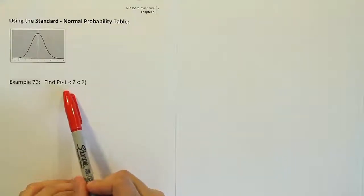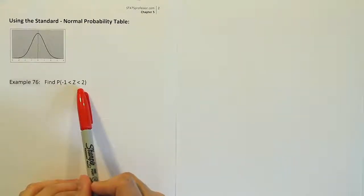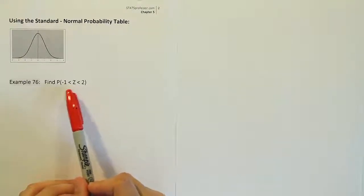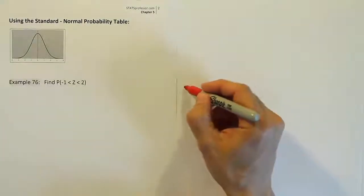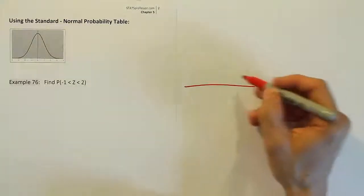So if they say find the probability that it's between these two numbers, and again it's between because it's literally physically between the two numbers in our statement, that means we're looking for the area on the curve between those two points. So again you're going to draw a bell curve, right? That's your first step.